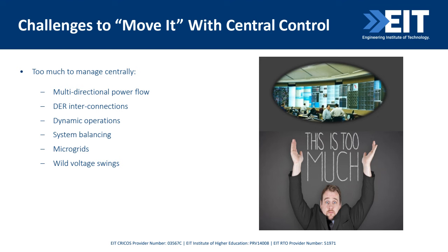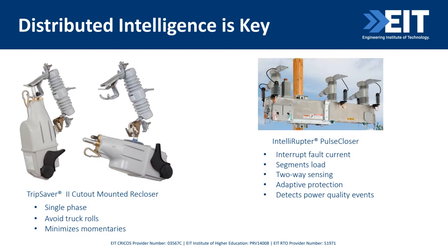The challenge at the moment is to move with the central control, and to be very frank, it's becoming a nightmare to manage this centrally. You have to look at multidirectional power flow, DER interconnection, dynamic operations, balance the system, microgrids, and wild voltage swings that are happening. The key is to find good distributed intelligence. There are reclosers with two-way sensing and adaptive protection — many of the things I talk about are already there in distributed intelligence.